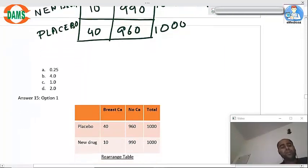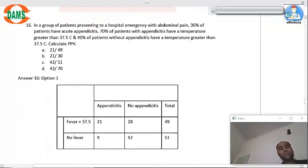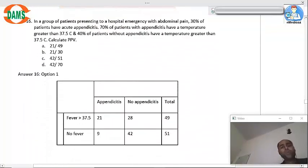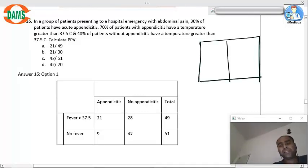So answer to this question was option number one. Now question 16: In a group of patients presenting to a hospital emergency with abdominal pain, 30 percent people have acute appendicitis. Okay, so let us take appendicitis, no appendicitis.